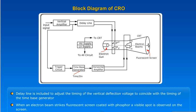When an electron beam strikes a fluorescent screen coated with phosphor, a visible spot is observed on the screen.